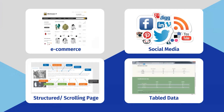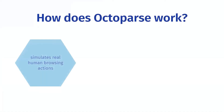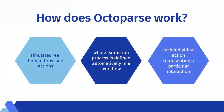So you're probably wondering, how does Octopus work? Octopus automatically extracts web page data as it simulates real human browsing actions, such as opening a web page and clicking anything on the page. The whole extraction process is defined automatically in the workflow, with each individual action representing a particular interaction with the target web page.